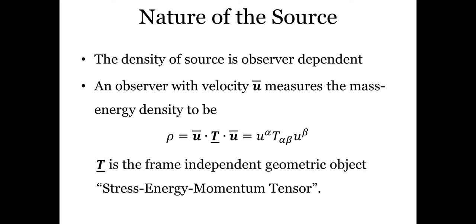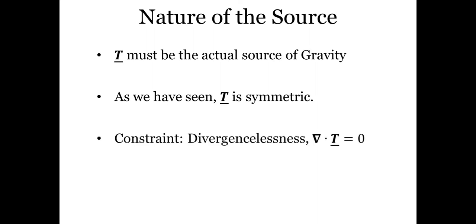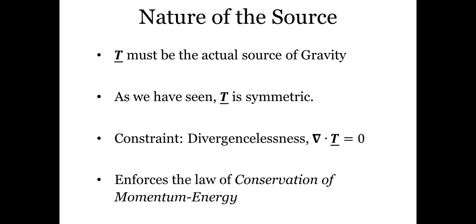Specifically, T does not depend on the observer, so T is considered to be the source. It is quite evident that T has to be the actual source of gravity. The stress-energy-momentum tensor can be chosen to be symmetric — in general relativity, it is postulated to be a symmetric object. Moreover, it also has the constraint that the divergence of this object is zero, and this constraint enforces the law of conservation of energy-momentum. This is what we understand by conserving the source, and it is at the heart of deducing Einstein's equations.